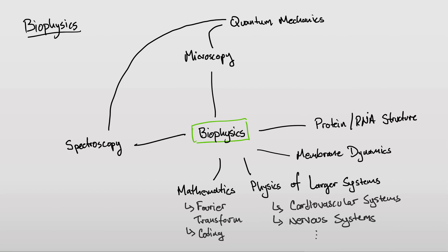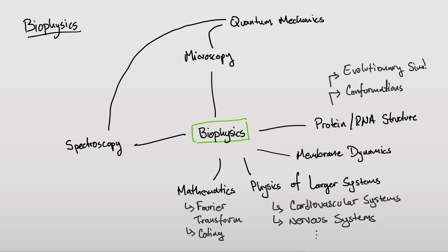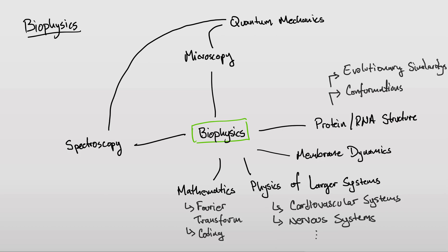When we study protein and RNA structure, we can study the conformations of these proteins and RNAs. We can also study not just the structures themselves but the evolutionary similarities and differences between related proteins — comparative structural biology is a significant part of this domain.